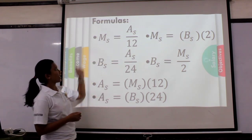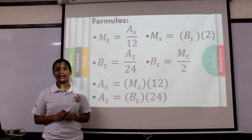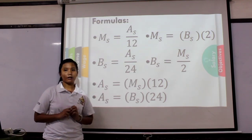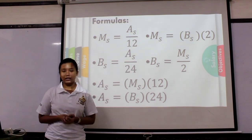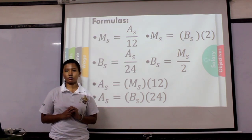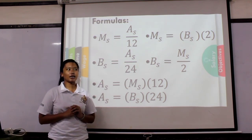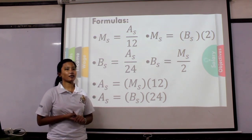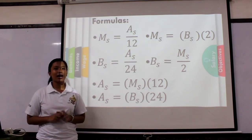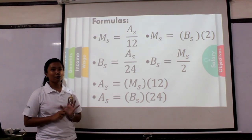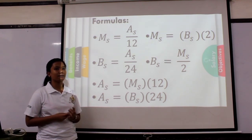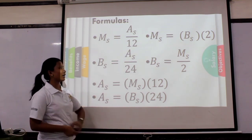Monthly salary is equal to annual salary divided by 12 — because there are 12 months in the year. Then, monthly salary is equal to bimonthly salary times 2, because you receive twice in a month. Then, bimonthly salary is equal to annual salary divided by 24, since you receive twice a month, so you multiply by 2 to get 24.